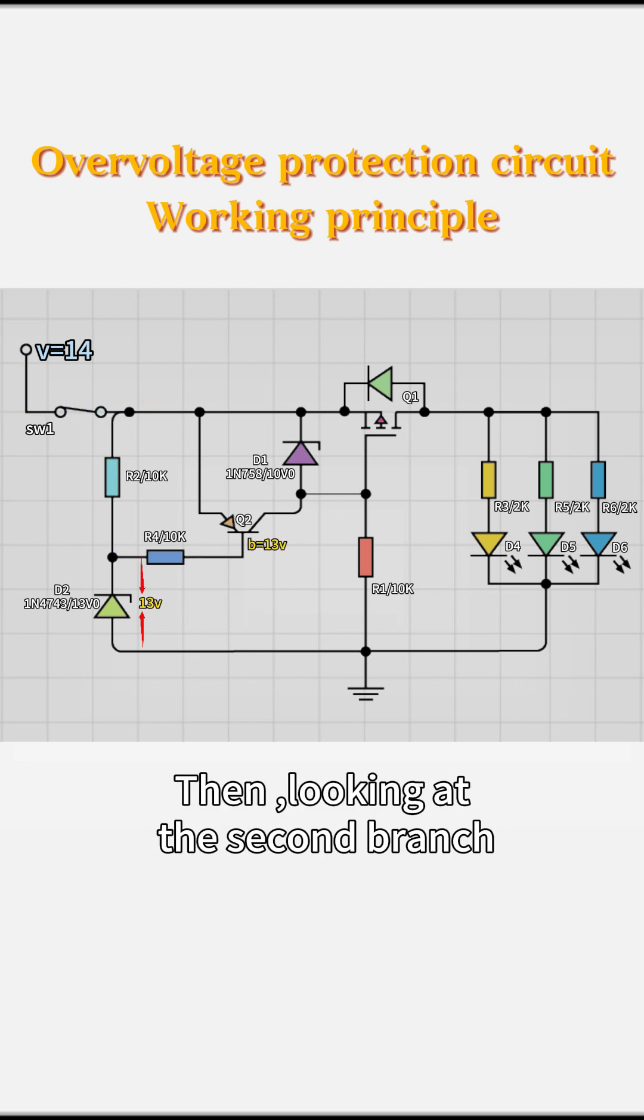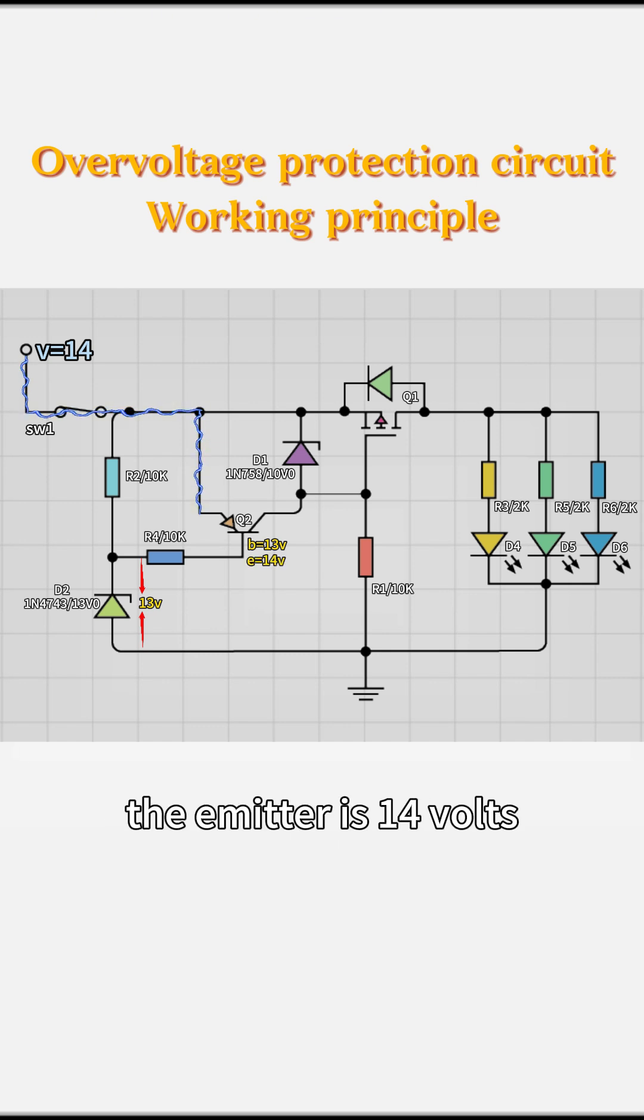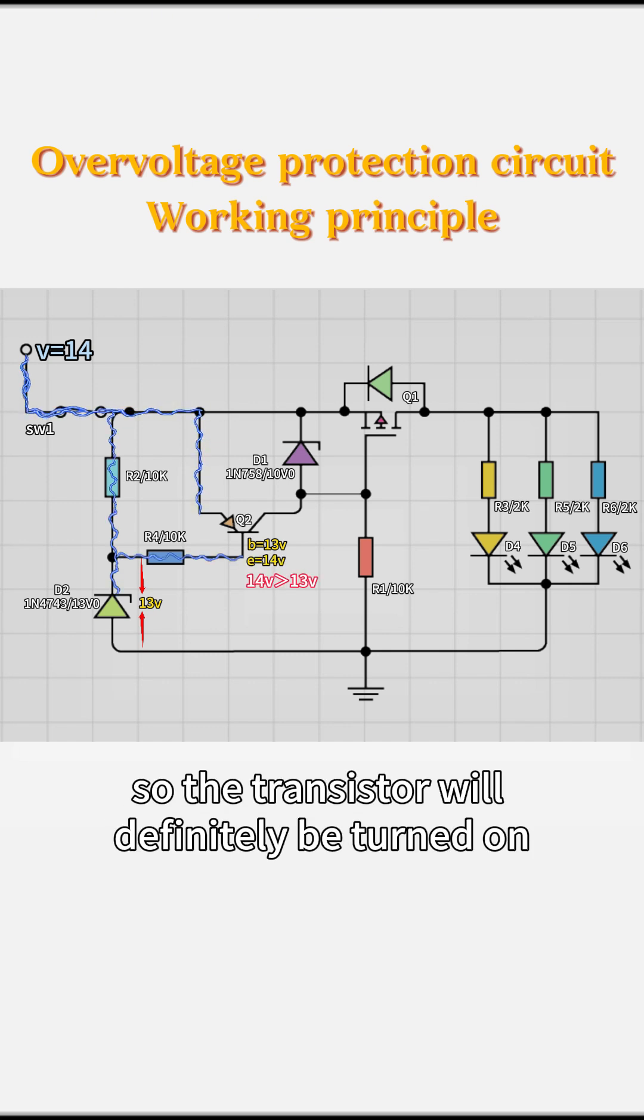Then look at the second branch. 14V pass through it directly to the emitter. At this time, the emitter is 14V, so the transistor will definitely be turned on.